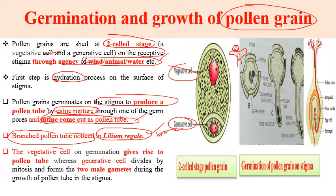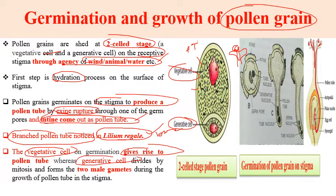The vegetative cell, which is the larger cell in the pollen grain, germinates and gives rise to the pollen tube. The generative cell, which is the smaller one, divides by mitosis to form two male gametes during the growth of the pollen tube in the stigma.